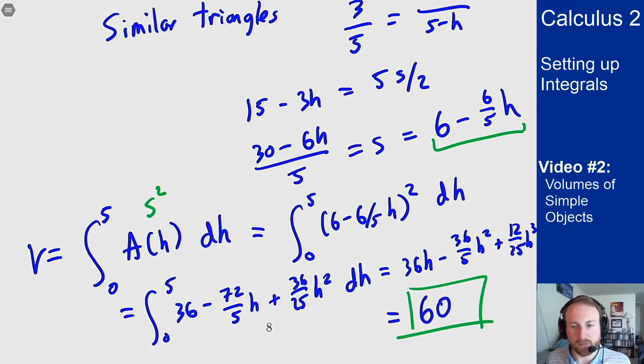Which is great because if you have your formula from geometry, it's 1 third base times height. That'll come out to 60 as well. So for these problems, the trick really comes down to how are you going to find the area as a function of height? And what do you have to do to get that area? In this case, it's similar triangles. And a lot of problems will be something like similar triangles or figuring out the radius of a circle in order to find the area as a function of height that you can then integrate to get the total volume of this object. I'll see you next time.